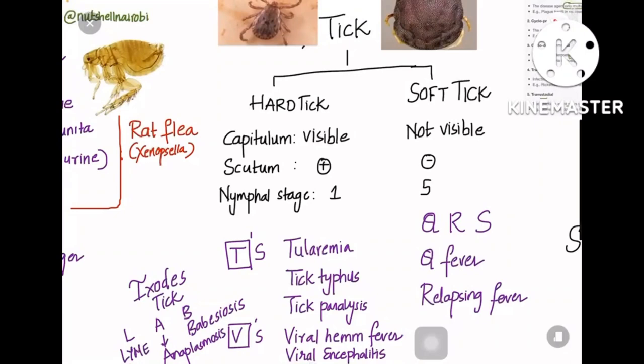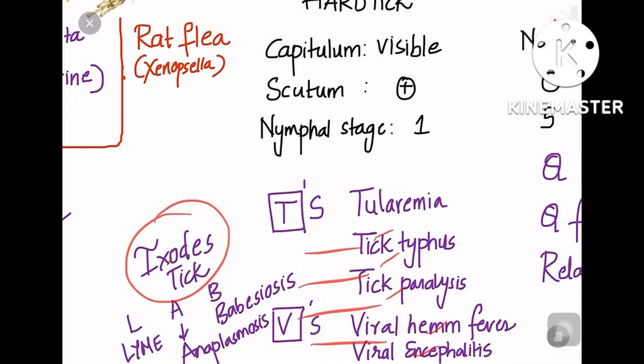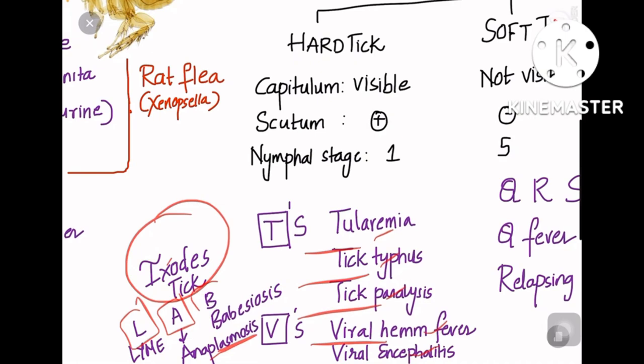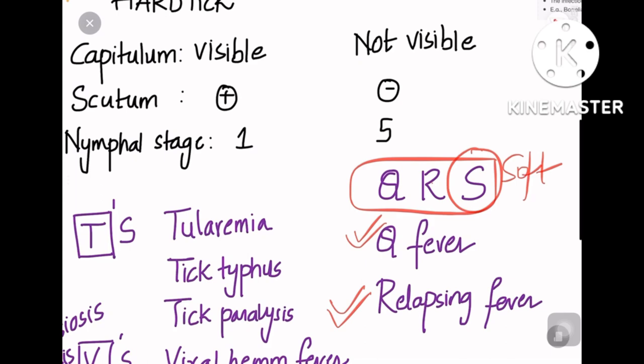Diseases caused by hard tick: T and V — tularemia, tick typhus, tick paralysis, viral hemorrhagic fever, and viral encephalitis. Ixodes (exotic) is an example of hard tick causing Lyme's disease, anaplasmosis, and babesiosis. For soft tick, the mnemonic is QRS: Q for Q fever and R for relapsing fever.